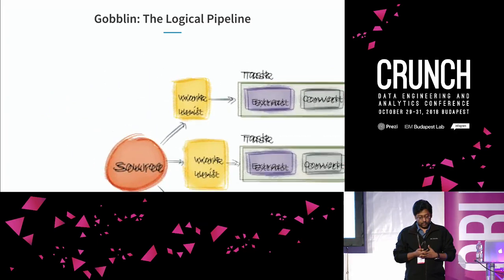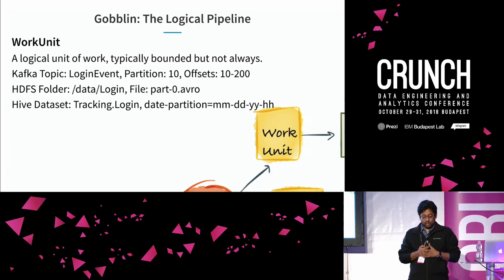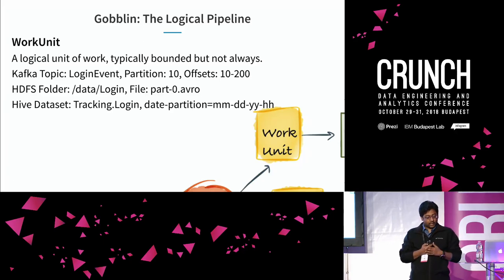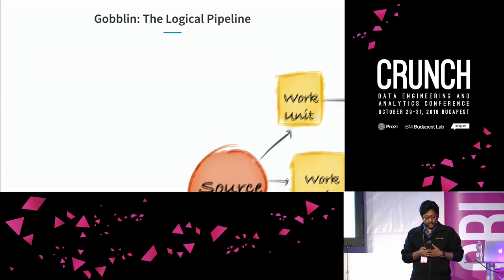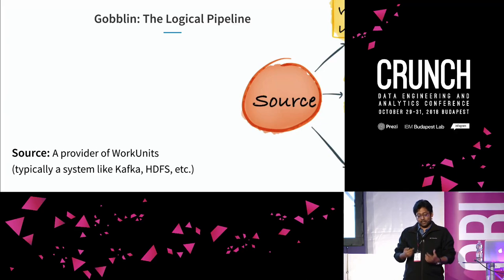A work unit is a unit of work. It could be bounded, but not always — 'not always' means streaming. Examples include a Kafka topic with a partition and offset range, an HDFS folder and file, or a Hive dataset with a DB name, table name, and partition name. The source is basically a provider of work units — it talks to the source where data has to be read and partitions the work into different manageable chunks.